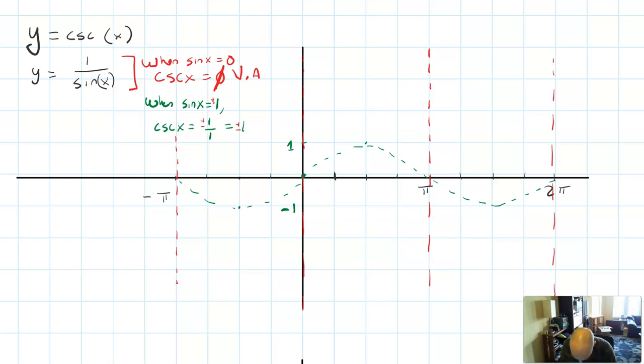Then I also observe that when sine of x is 1, cosecant should also be 1. So that happens at pi over 2. At 3 pi over 2, sine x is negative 1, and it happens at negative pi over 2 as well.